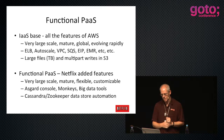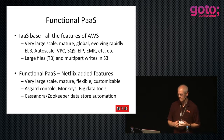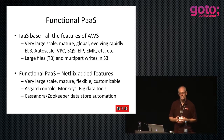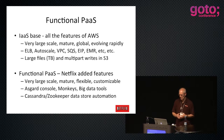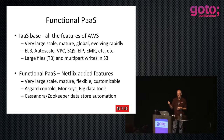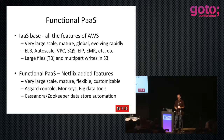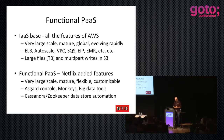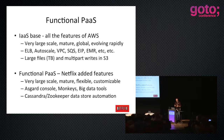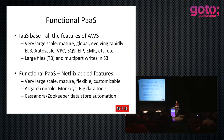On top of that, we added our own features - large scale, mature, flexible, customizable. We have a console called Asgard which replaces the Amazon console - that's up on GitHub. We have what we call monkeys - think of them like daemons on Linux that run stuff for the operating system. The monkeys are autonomous services we run in our cloud: chaos monkeys, janitor monkeys, and things that tidy stuff up and kill things. We also spent a lot of time on Cassandra and Zookeeper automation to make it trivial to deploy a Cassandra cluster.